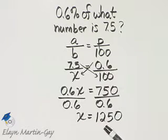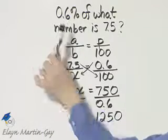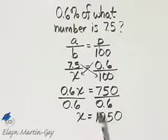So of what number? That number is 1,250. How can you check? Find six-tenths percent of this number. It should be seven and five-tenths.